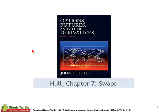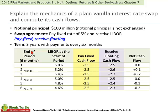Chapter seven on swaps asks us to first explain the mechanics of a plain vanilla interest rate swap. By plain vanilla, we refer to one counterparty paying a fixed coupon and in exchange receiving a floating rate coupon. The other counterparty is in the opposite position.